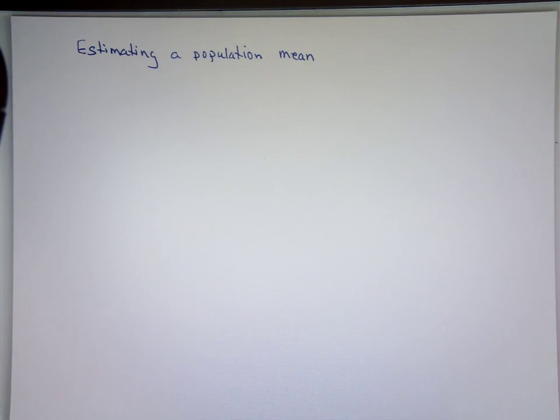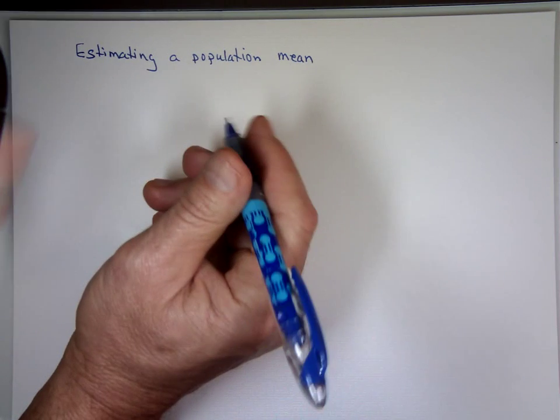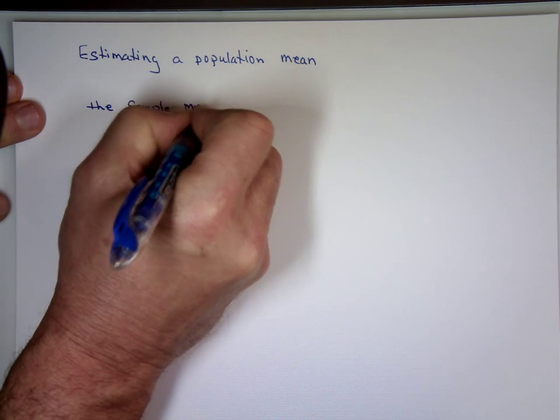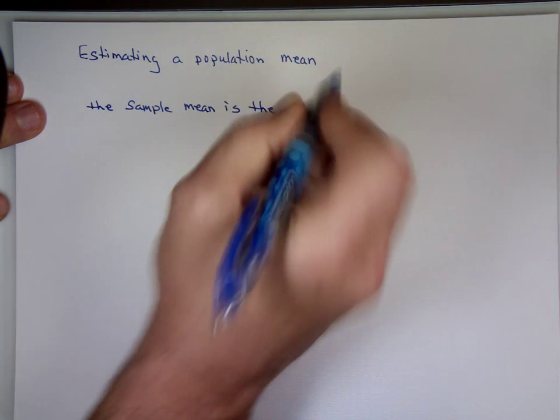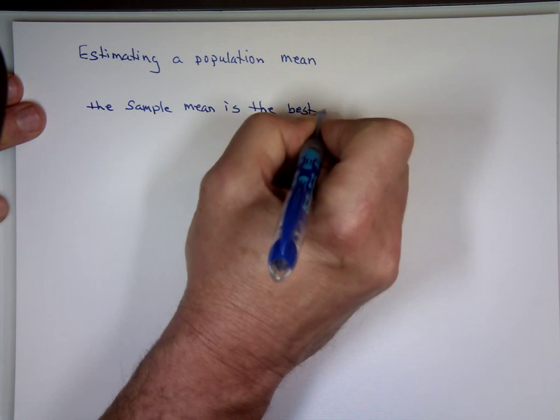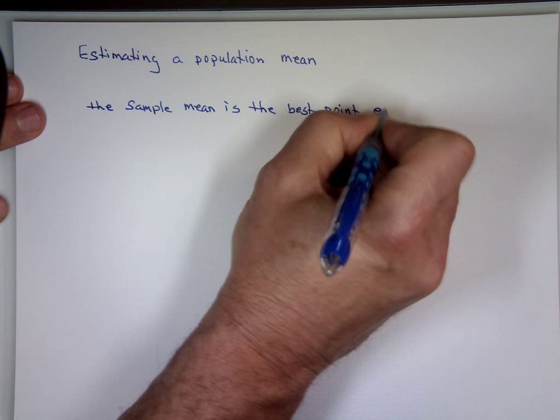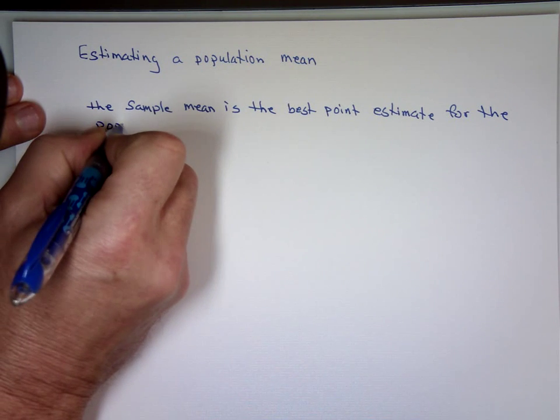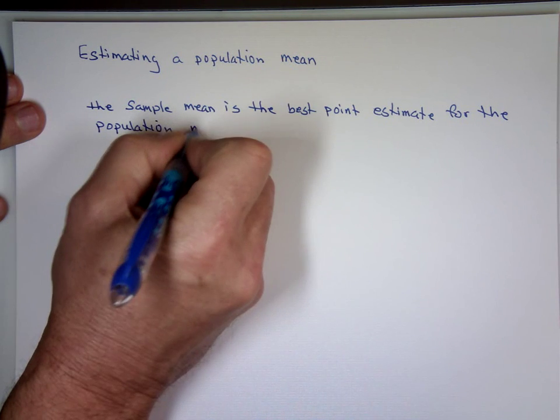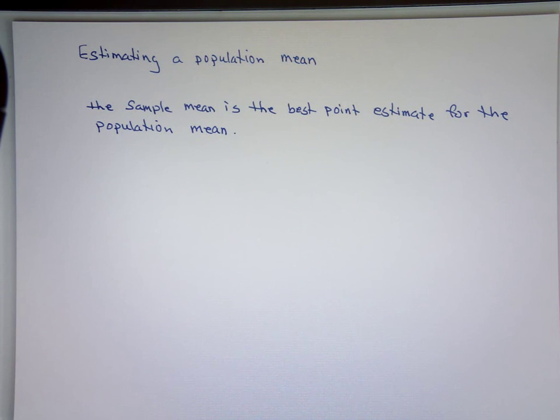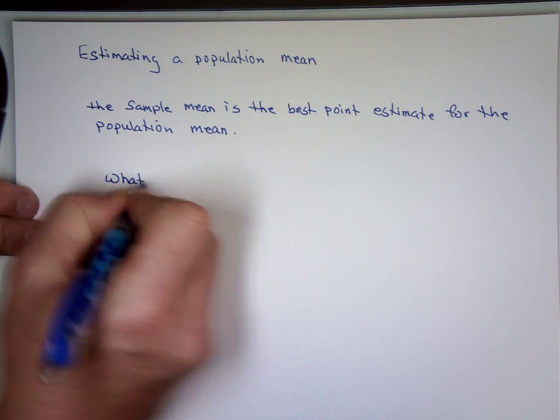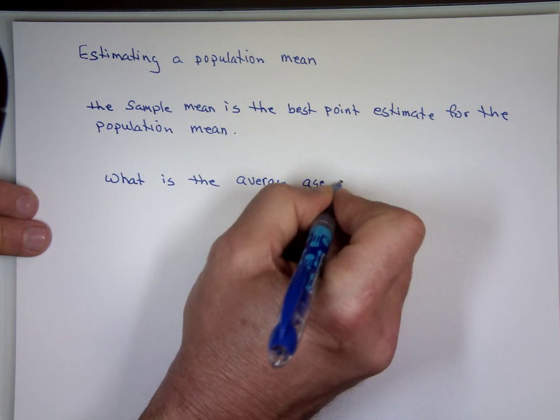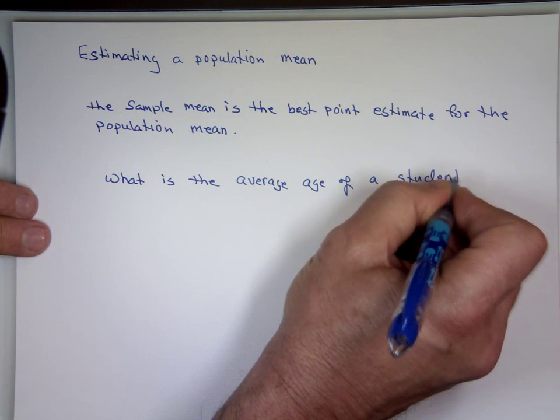Just like in the previous video, if you want to get a point estimate for the population, the sample mean is the best point estimate if you're looking for a single value for the population mean. For example, I'm interested to know what is the average age of a student at the college.